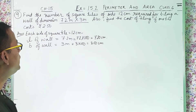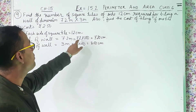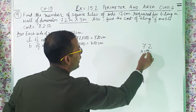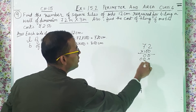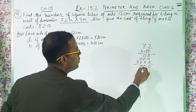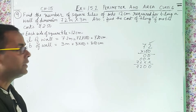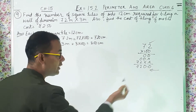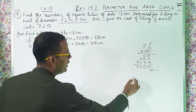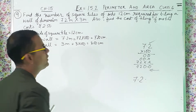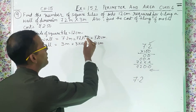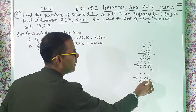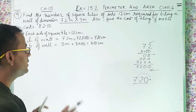Now, 3 into 100 is 300, and for 7.2 into 100, you simply multiply and get 720. Another easy shortcut: 7.20 has one digit after the decimal, and since 100 has two zeros, you move the point two places to the right — giving 720. So length of wall is 720 cm and breadth is 300 cm.